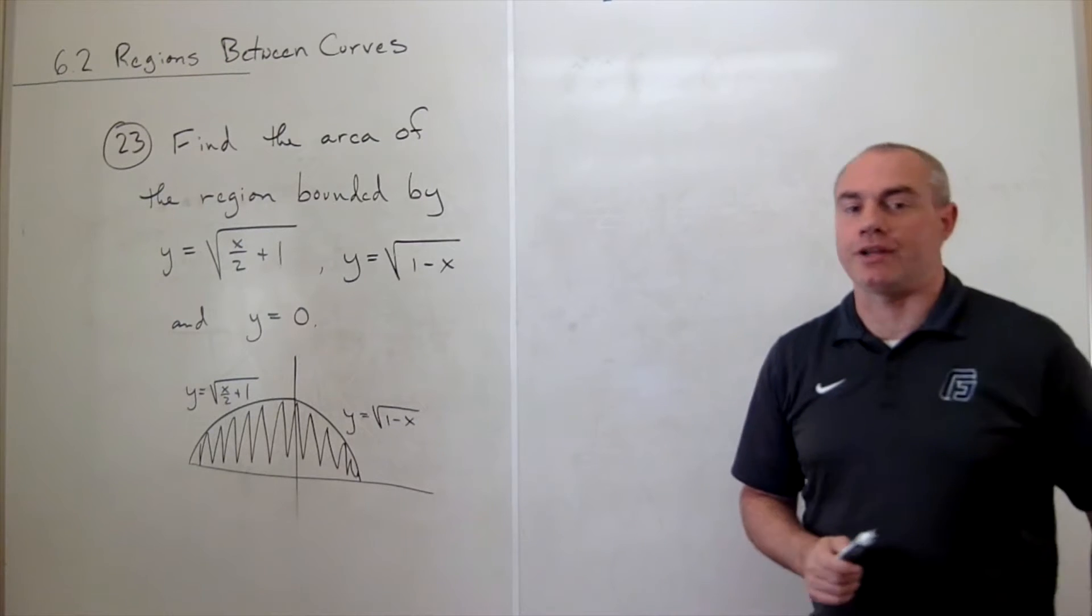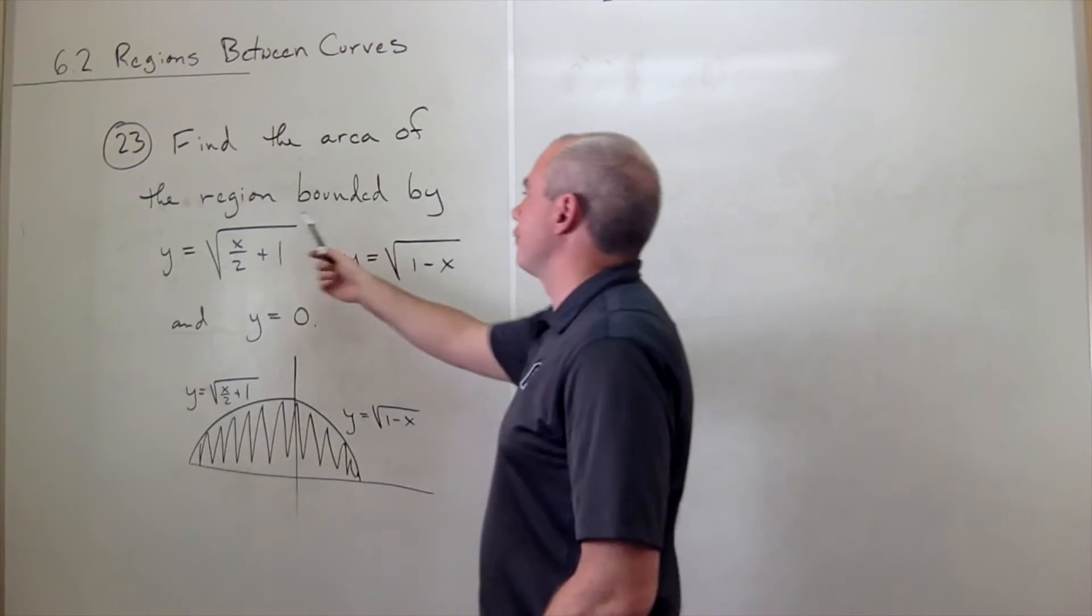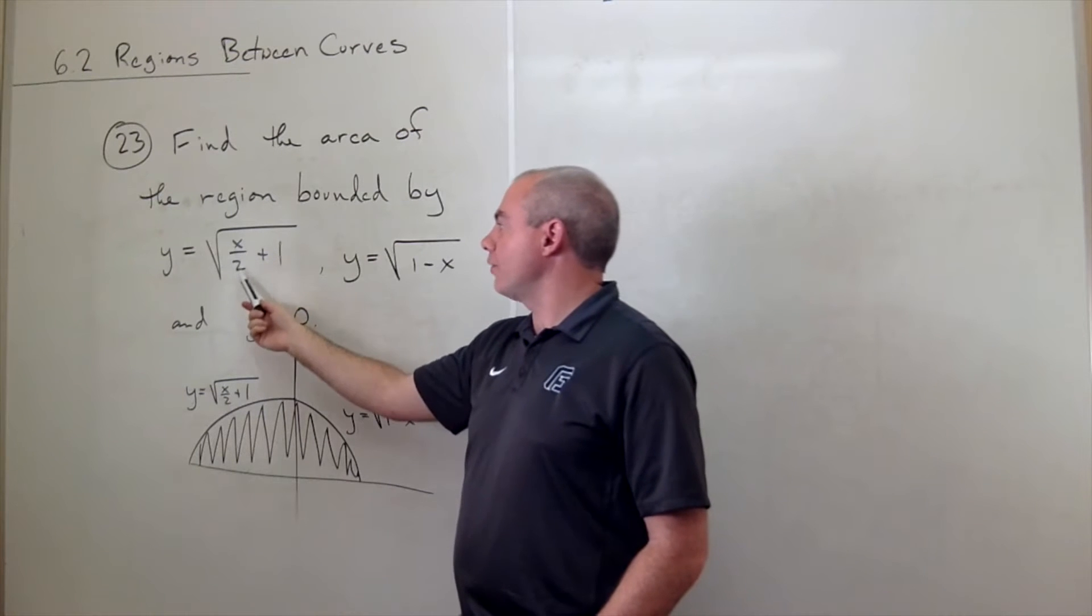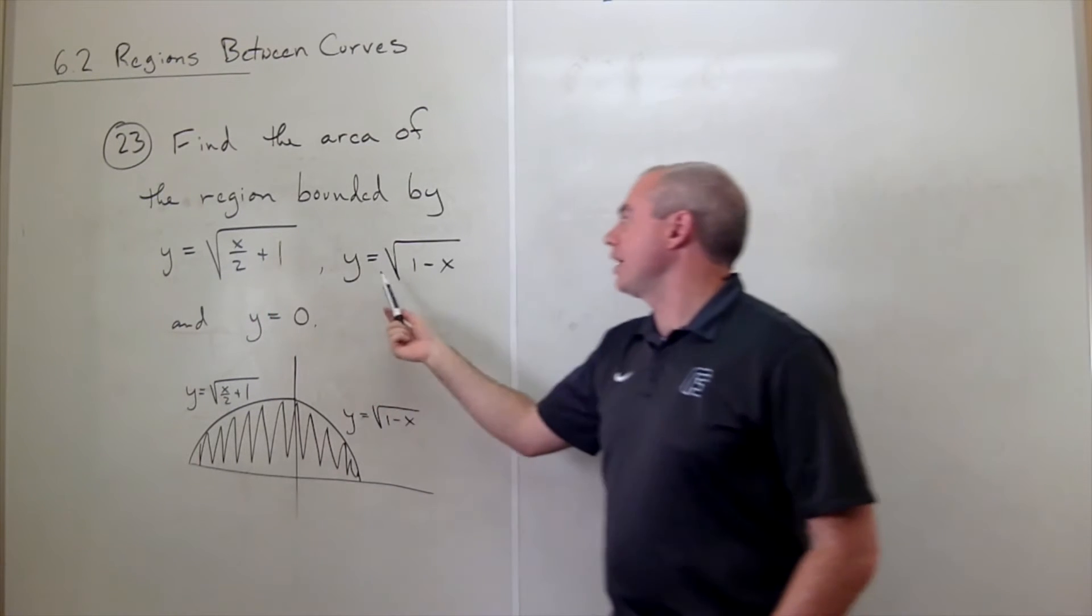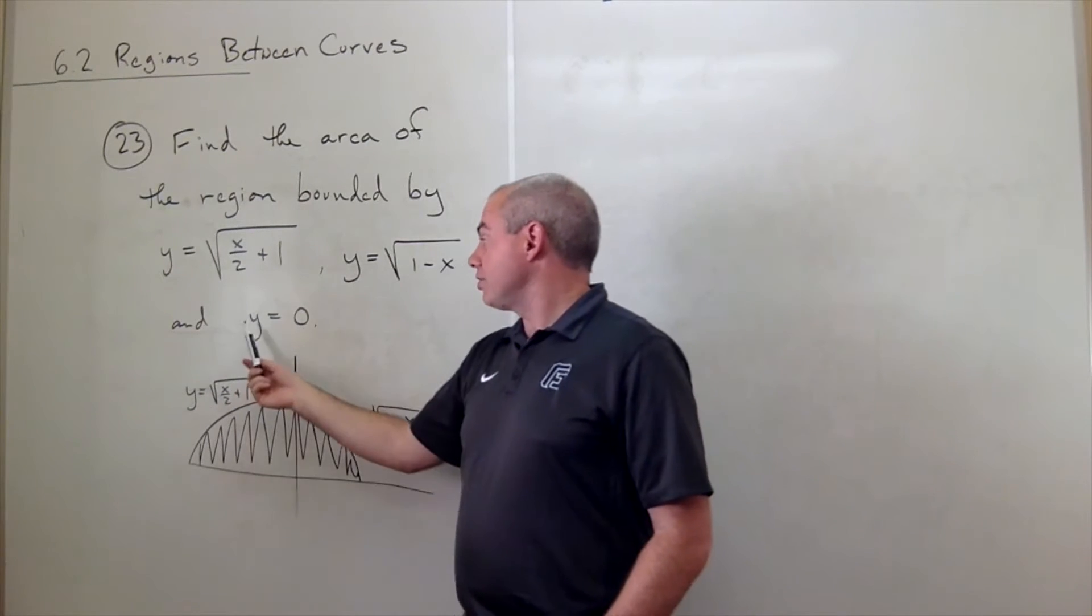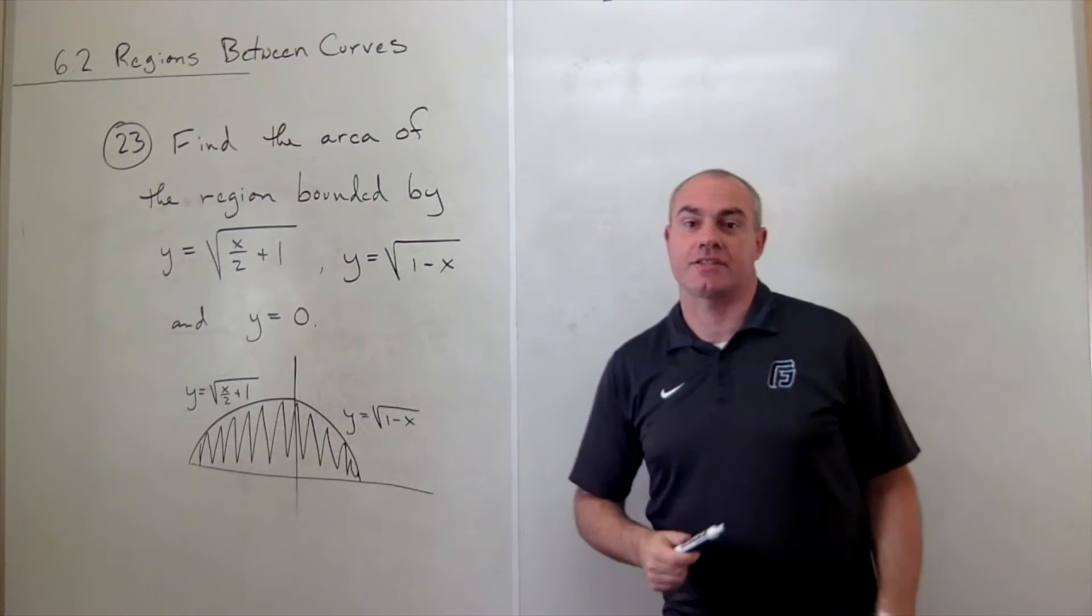In problem number 23, we'd like to find the area of the region bounded by y equals the square root of x over 2 plus 1, y equals the square root of 1 minus x, and y equals 0, which is the x-axis.